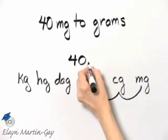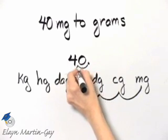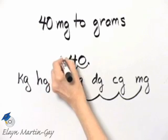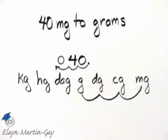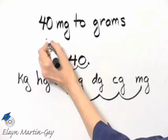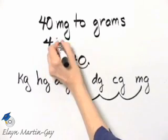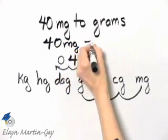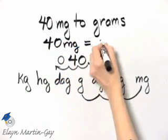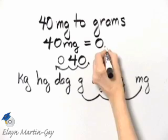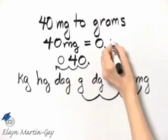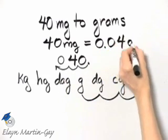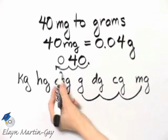So I take the decimal point in 40 and I do the same thing — I move that decimal point one, two, three places to the left. And then I have converted to grams. In other words, 40 milligrams is equal to four hundredths grams.